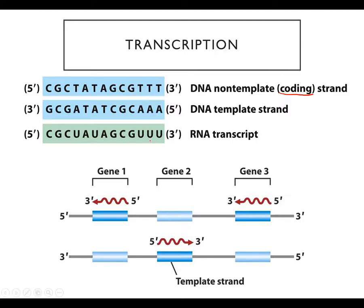For any given gene, one strand is always the template strand and the other is always the non-template or coding strand. Sometimes the template strand is also called the non-coding strand. But for any given chromosome, either strand can be the template or non-template strand depending on the gene. For example, here we have three different genes all on one chromosome, one double-stranded DNA.